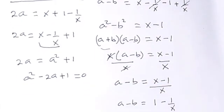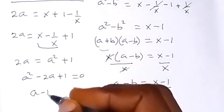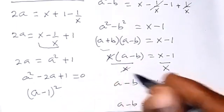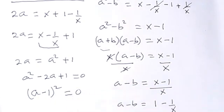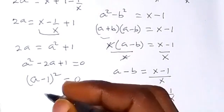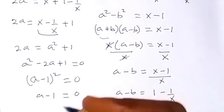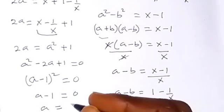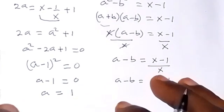This can be written in the form (A minus 1) squared equals 0. Taking the square root of both sides gives A minus 1 equals 0, and the square root of 0 is 0. So A equals 1.